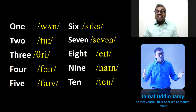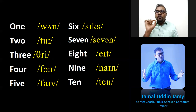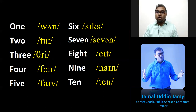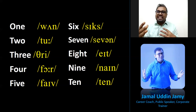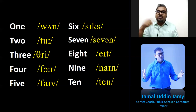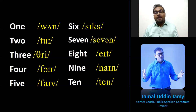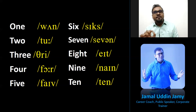Three, four — when the 'f' sound comes, it is a labiodental sound: your upper teeth will touch your lower lip. Four, five — both are labiodental sounds. See the place of articulation in my face: five, five, six, six, seven, seven, eight, nine, ten.